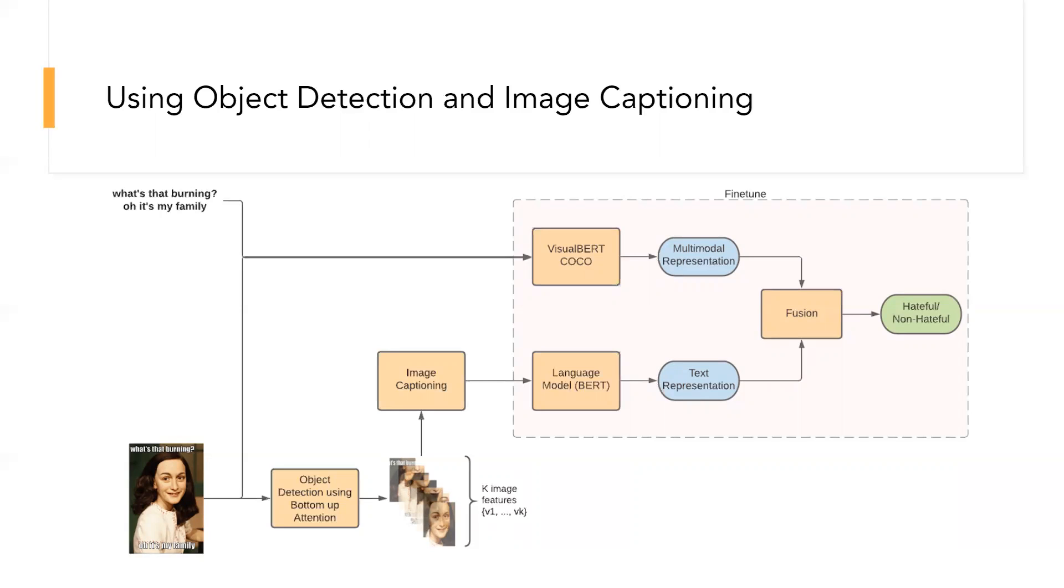Then we added image captioning implementations on top of it and fusing them together using concatenation and bilinear transformation. This improved the accuracy by roughly 3%, thus giving us a verification of the importance of object detection and image captioning. But as we were doing it only on the simple baseline, the accuracy was still low.